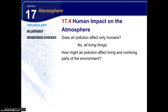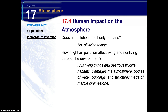Air pollution affects both living and non-living parts of the environment. It kills living things and destroys wildlife habitats. It also damages the atmosphere, bodies of water, buildings, and structures made of marble and limestone. One example is the Parthenon in Greece, a cultural monument that has been damaged by acid rain — very expensive to restore and sometimes permanently damaged. Other harmful effects include damage to regional tree populations, such as spruce trees in the Appalachian mountain ranges of the eastern United States.